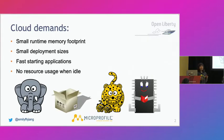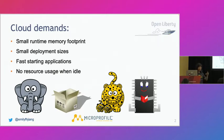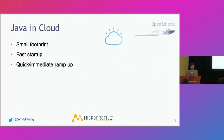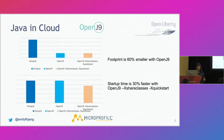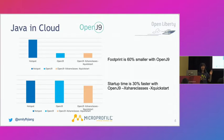Let's talk about what the cloud demands. In the cloud, everything costs money, so your application needs to be really small — use less memory and be very fast. Because we're talking about Java, you need a JVM that is also small and fast. There are two very popular JVMs: one is Oracle HotSpot, and the other is the open source project called OpenJ9. OpenJ9 is very performant — very small and very fast.